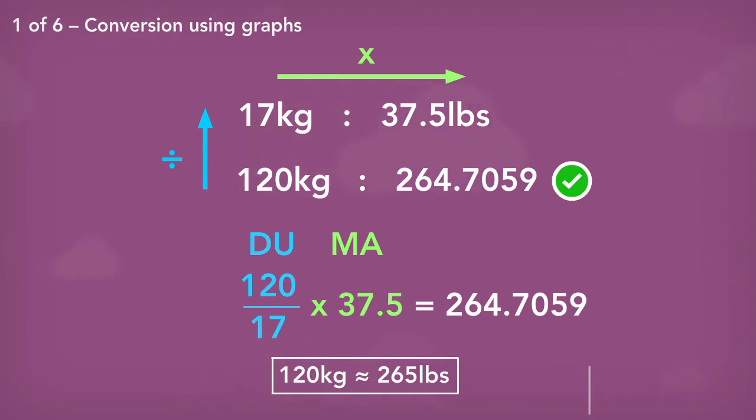In an exam with this type of question, the examiners won't be so harsh and will accept a range where the answer can lie within. So for this question, 264.7059, the range of answers that they would accept would be roughly between 262 and 266.